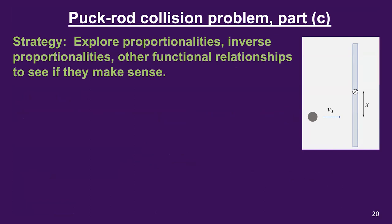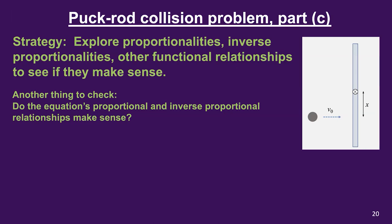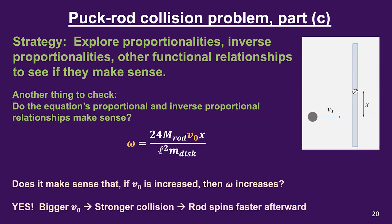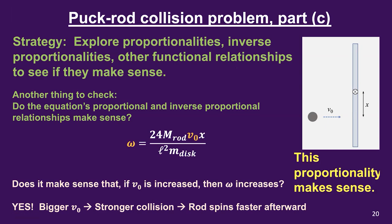We have to continue with the overall strategy, focusing on proportional and inverse proportional relationships to see which make sense. Let's start with the relationship between omega and V-naught. The equation says V-naught is in the numerator, so omega is directly proportional to V-naught — if V-naught is doubled, omega doubles. Does it make sense that if V-naught is increased, omega increases? Yes — a bigger initial velocity of the puck leads to a stronger collision, and therefore the rod ends up spinning more quickly. That proportionality makes sense.